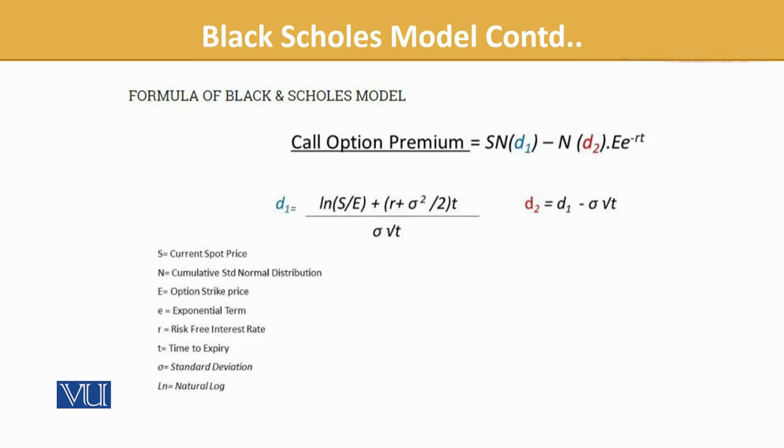You could remember we said stock price, strike price, term, and then the risk-free rate. t is time to expiry - for how many periods the option derives. Standard deviation sign σ you already know, and ln is for natural log.